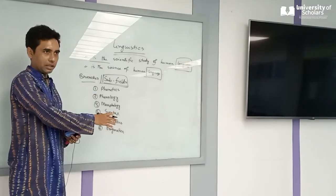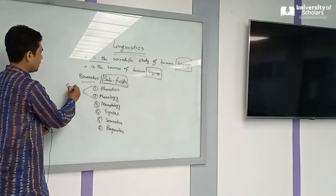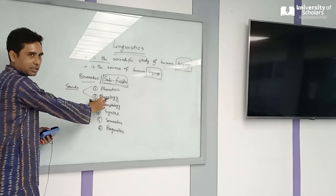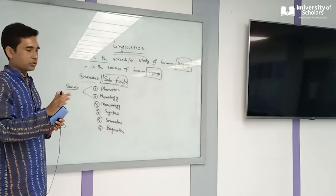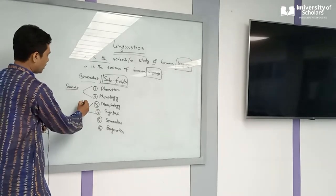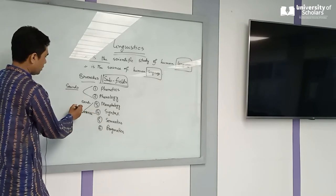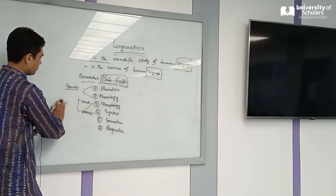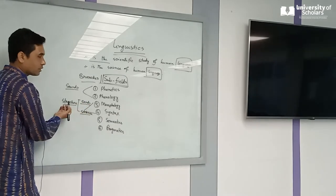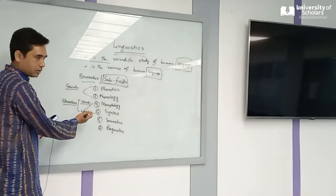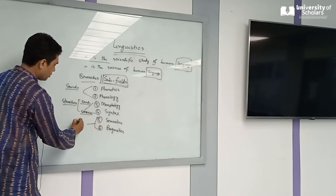These names are familiar to you. These two branches — phonetics and phonology — are related to the sounds of language. Morphology is word related, and syntax is sentence related — both are structure related. So word structure and sentence structure, overall structure. And semantics and pragmatics are related to meaning.